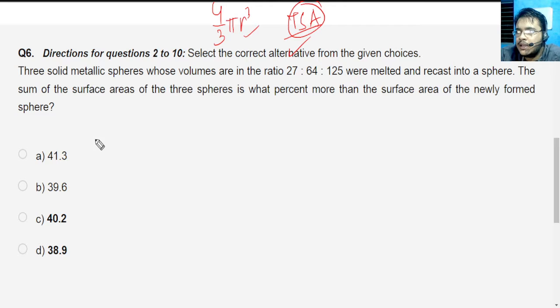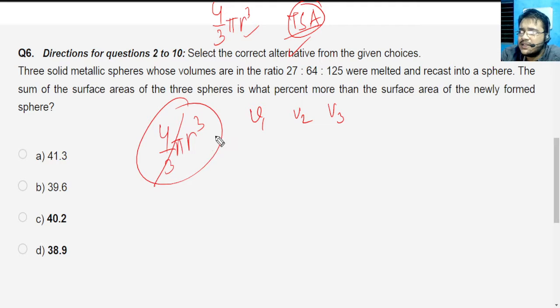This question is very interesting. Let's understand this one. Three metallic solid spheres whose volumes are in the ratio 27:64:125. So volumes basically v₁, v₂, v₃, and I know that volume of sphere is going to be 4 by 3 π r³. If I just eliminate the 4π part from all of these, I can get r₁³, r₂³, r₃³ in the notation.